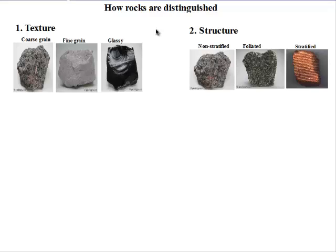Secondly, we also distinguish rocks based on their structure. Some rocks are stratified, that is they are in layers. Some are foliated, meaning the minerals present in the rocks are in layered form. Then we have rocks which are non-stratified, that is not layered, and rocks which are non-foliated, meaning the minerals are randomly placed in the rock.